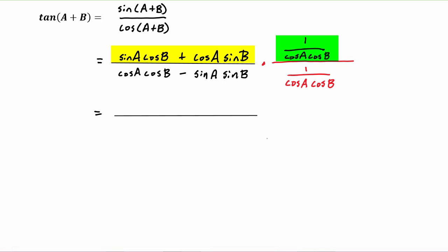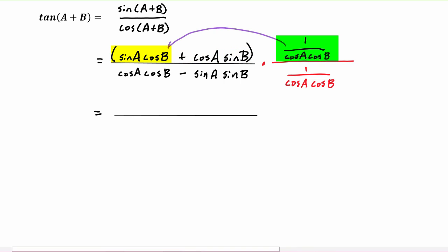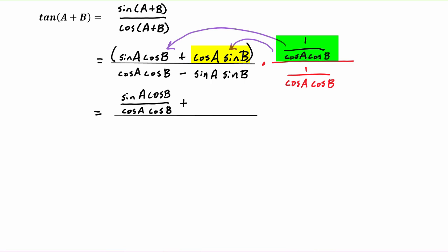Now let's look at the numerator first. We will have to distribute this over both terms. So we'll take this first multiplication and get sine of a cosine b divided by cosine a cosine b, then plus cosine a sine b over cosine a cosine b.